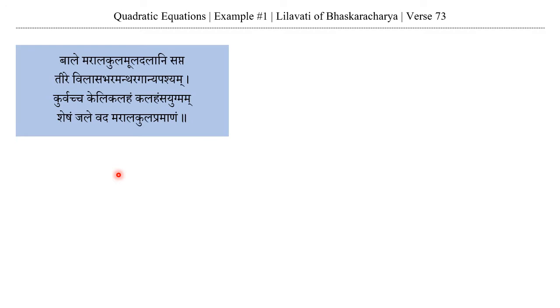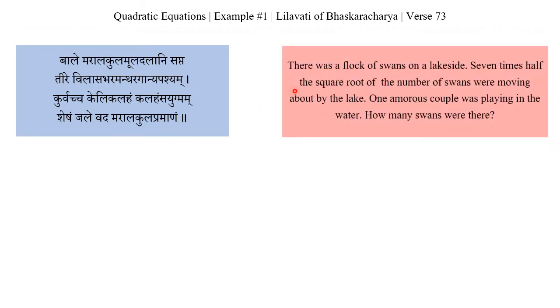shesham jale vada maralakula pramanam. So what it means is that there was a flock of swans on a lakeside. Seven times half the square root of the number of swans were moving about by the lake. One amorous couple was playing in the water. How many swans were there?